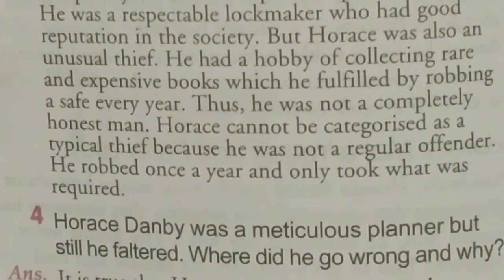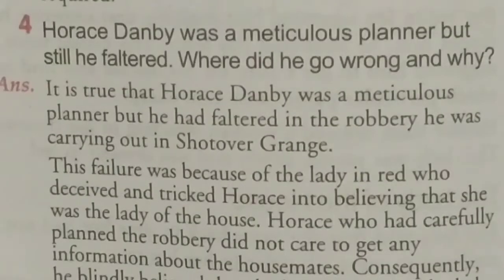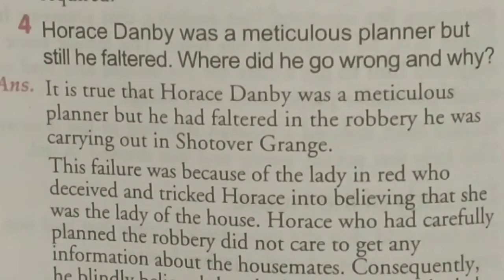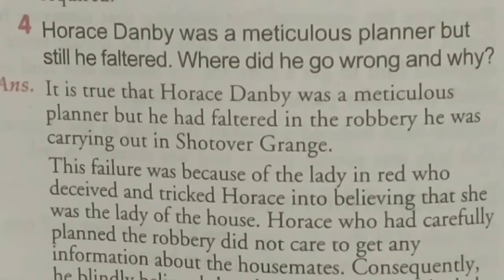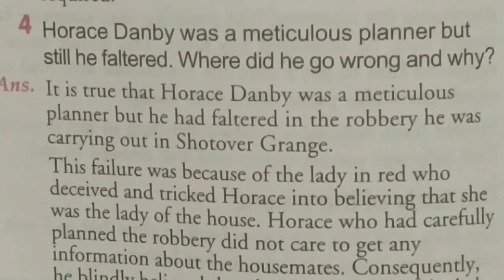Horace cannot be categorized as a typical thief because he was not a regular offender — he robbed once a year and only took what was required. Question number four: Horace Danby was a meticulous planner but still he faltered. Where did he go wrong and why? Answer: It is true that Horace Danby was a meticulous planner, but he faltered in the robbery he was carrying out at Shott Over Grange.